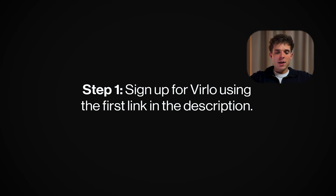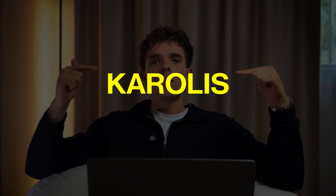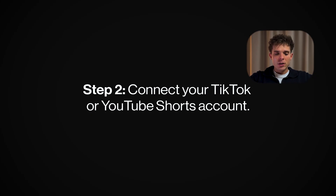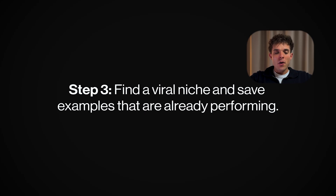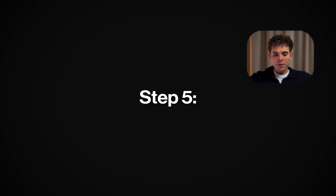Let's do a quick recap. Step 1: Sign up for Verlo using the first link in the description. Choose your plan and use code CAROLIS at checkout for an extra 10% off. Step 2: Connect your TikTok or YouTube Shorts account. Step 3: Find a viral niche and save examples that are already performing. Step 4: Use the guided flow to generate your own Sora 2 AI video. Step 5: Post consistently, because all it takes is one video to blow up. Thank you for watching and I'll see you in the next one.